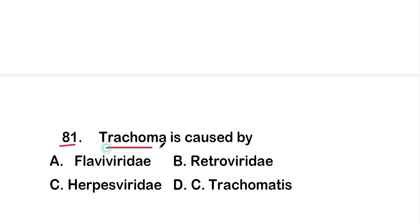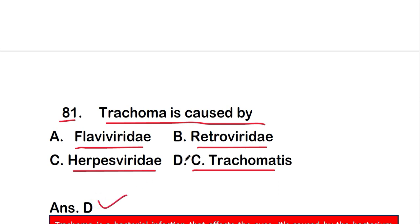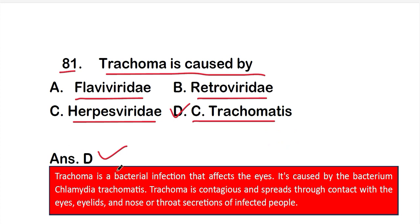Trachoma is caused by: option A, Flaviviridae; option B, Retroviridae; option C, Herpesviridae; or option D, Chlamydia trachomatis. The right answer is option D — Chlamydia trachomatis. Trachoma is a bacterial infection that affects the eyes, caused by the bacterium Chlamydia trachomatis.